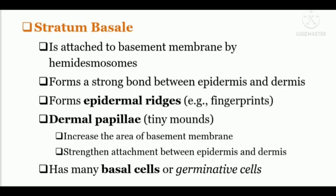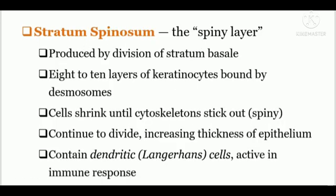The first layer, stratum basale, is attached to the basement membrane by hemidesmosomes. It forms a strong bond between the epidermis and the dermis and creates epidermal ridges — you know these as fingerprints. It has tiny mounds called dermal papillae, which increase the surface area of the basement membrane and strengthen the attachment between epidermis and dermis. It contains basal cells or germinative cells, also known as stratum germinativum — these cells produce new cells.